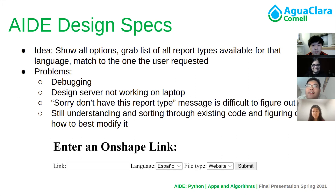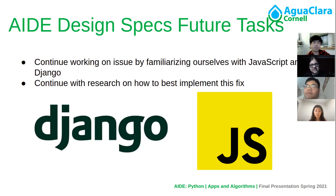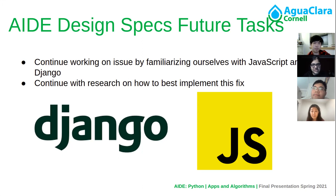There is also an issue where the server is not working on one team member's laptop, so there may be something wrong with the laptop or the repo itself that we are trying to fix. Our goal and plan is to continue working on this issue by familiarizing ourselves with JavaScript and Django. JavaScript is a front-end language and Django is a high-level Python framework that allows for the creation of web applications. We are going to continue learning more about them, including talking to people more familiar with web design and integrating JavaScript with Python.